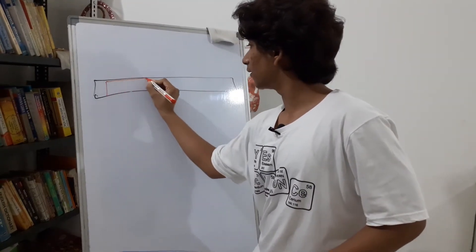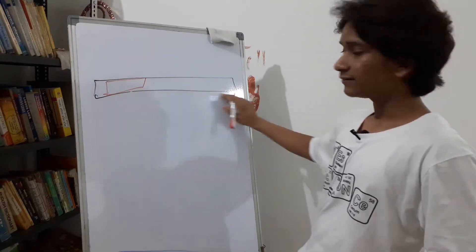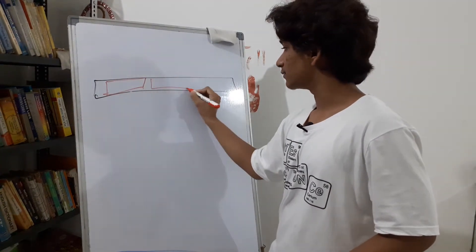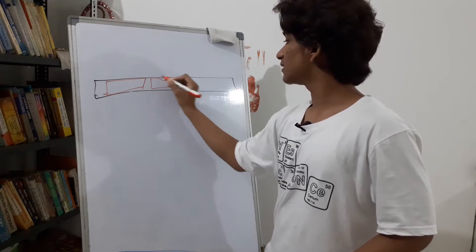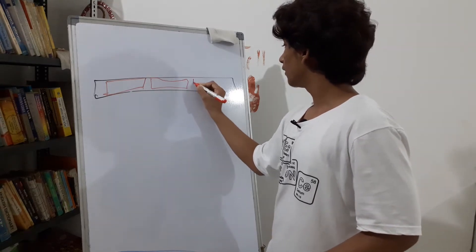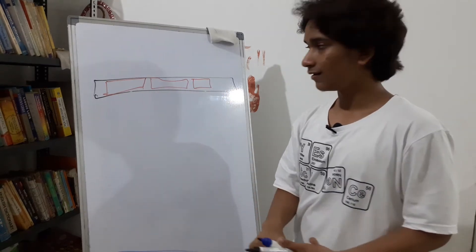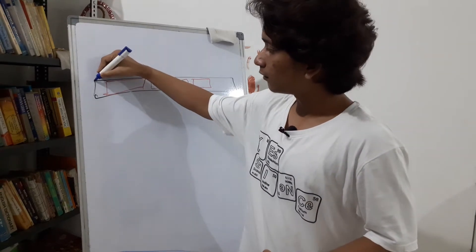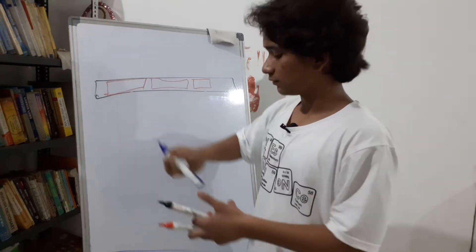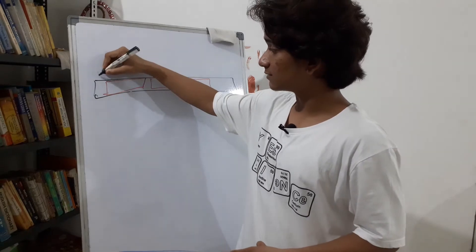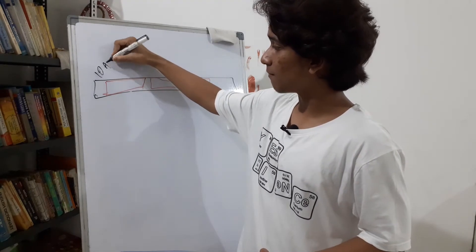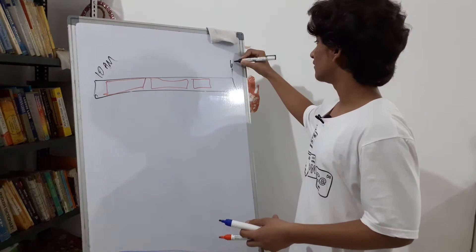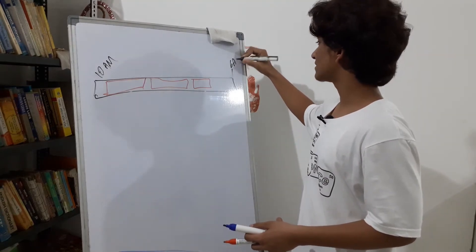What you don't want is an overlap. Suppose this is the timeline — the black line — and these red boxes are the bookings already made. Suppose this is where your day begins, say 10 a.m.